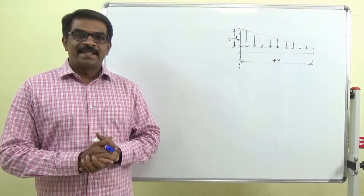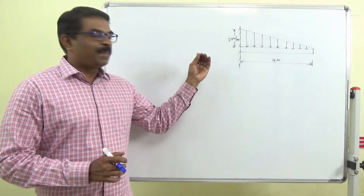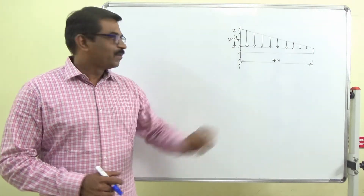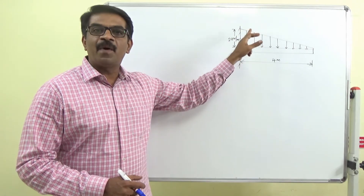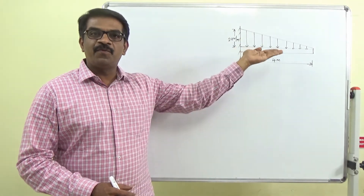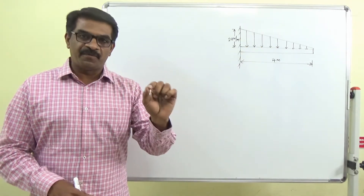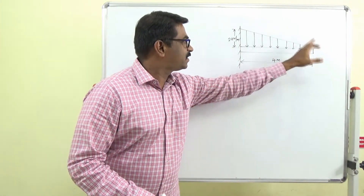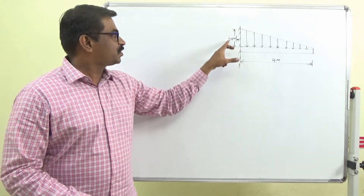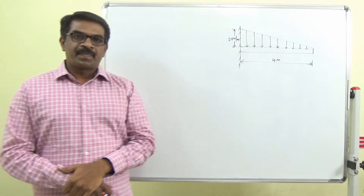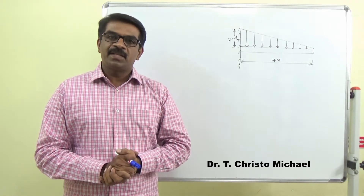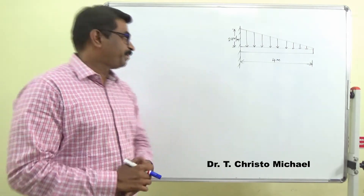Hello friends. In this video we will find out shear force and bending moment for a cantilever beam carrying a uniformly varying load as shown in the figure. At the free end the load is 0 and at the fixed end it is 2 kN per meter. We will find the shear force and bending moment and then draw the shear force and bending moment diagrams.